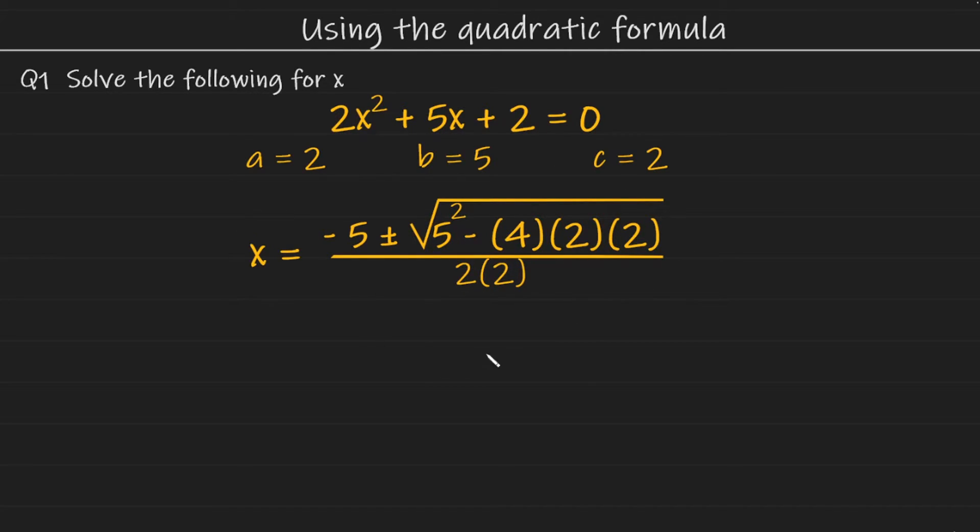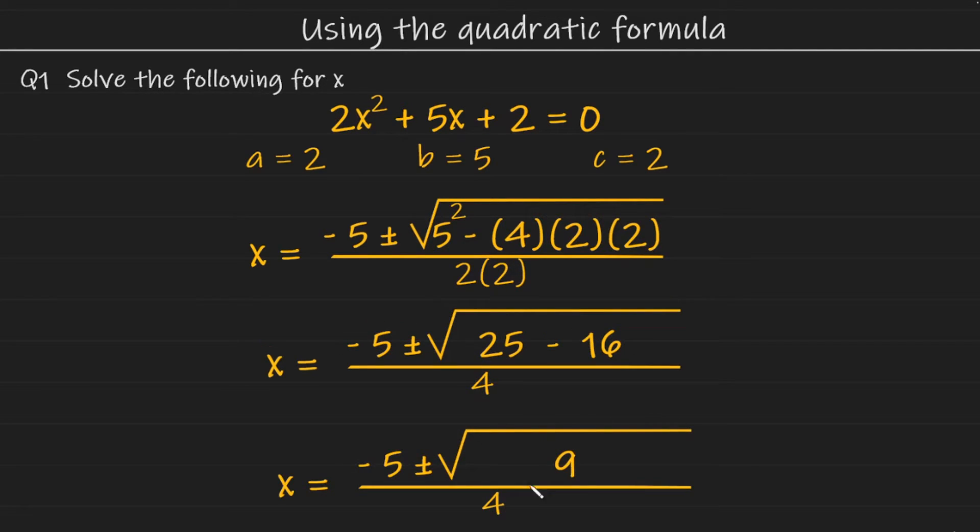So performing the calculations and simplifying, we get the following. Simplifying further, so 25 minus 16 is 9. Now the square root of 9 is 3, so I can break that down even further.